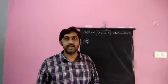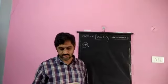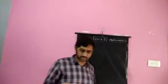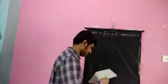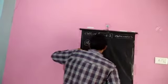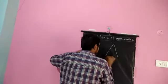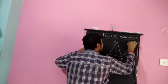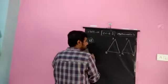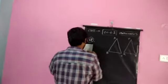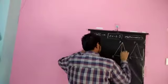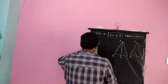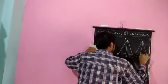Moving to question 12: sides AB and BC and median AD of triangle ABC are respectively proportional to sides PQ and QR and median PM of triangle PQR. Show that triangle ABC is similar to triangle PQR. There are two triangles — triangle ABC and triangle PQR — and AD is the median of triangle ABC, while PM is the median of triangle PQR.